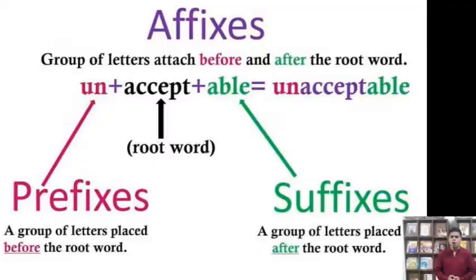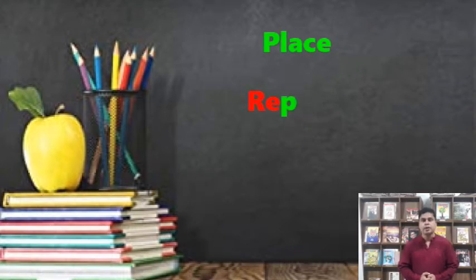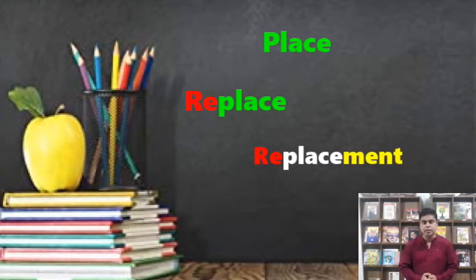Hello students. In this video we will look at how to take words you have already known and make them into new words. All you have to do is add a few letters before the word — these are called prefixes — or add a few letters after a word, which is known as suffixes. Here is an example: place, replace, replacement. Be careful, you can't do this with all vocabulary, but you can have fun experimenting with which ones work. Let's look at prefixes first.